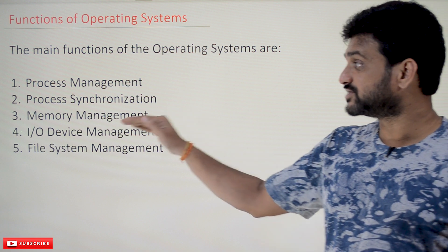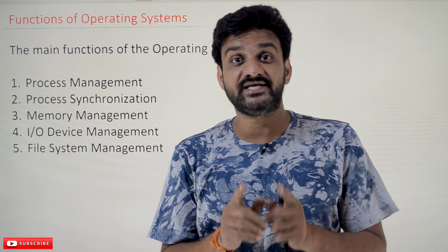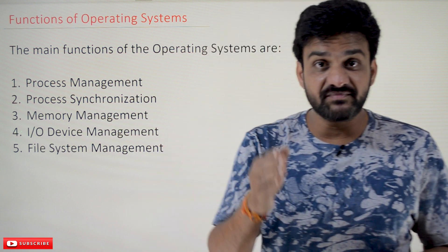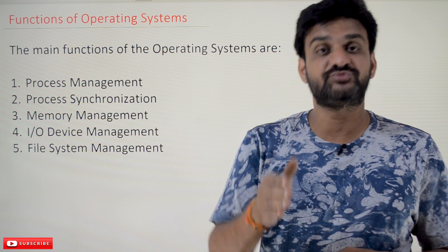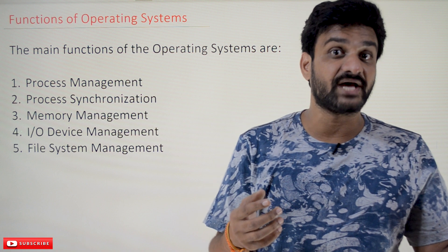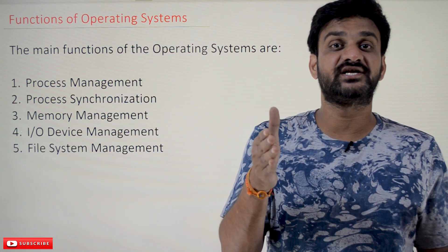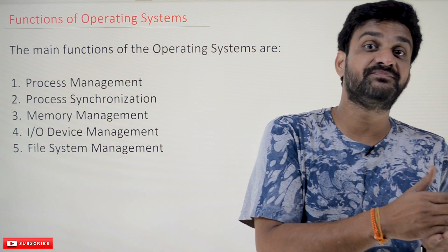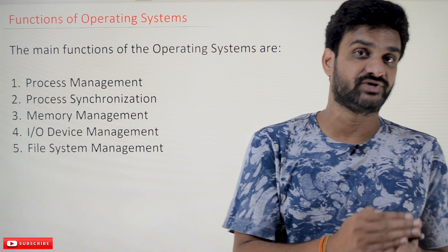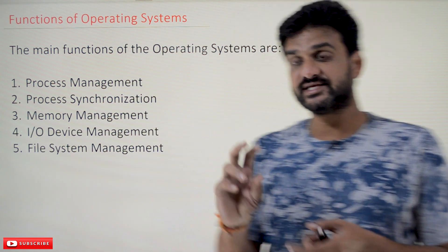The third function of the operating system is memory management, which means primary memory management — RAM management. The primary memory RAM has to be managed efficiently so that we can utilize CPU time efficiently. If the RAM is not utilized efficiently, then the utilization of CPU time is going to reduce.